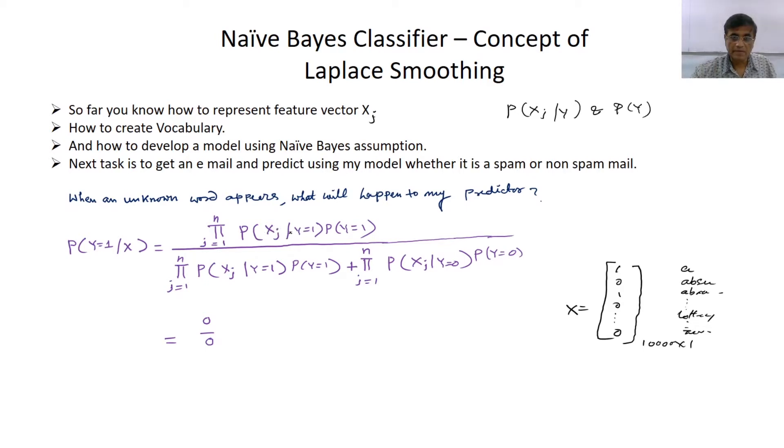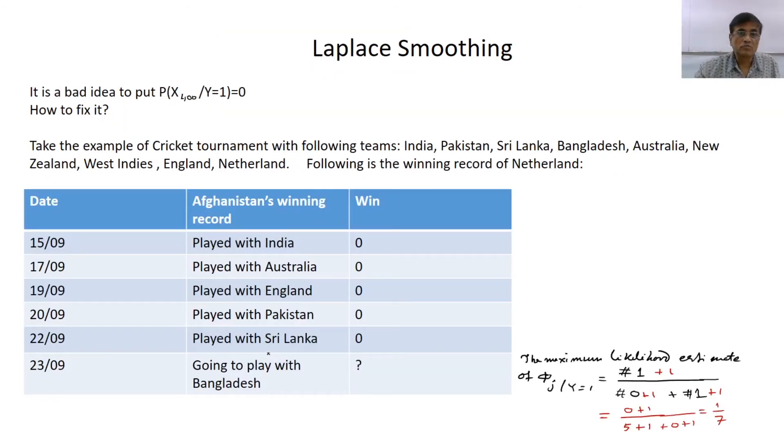Unfortunately the prediction equation will take the form 0 by 0 because the word has not been seen. The probability with that particular word belonging to a spam class will be 0, and non-spam will also be 0 because the word is unknown to the classifier. So actually it is a bad idea to give that particular probability a 0 value. This could be any word in my vocabulary that resulted in 0 by 0 form for prediction. So how to fix it?